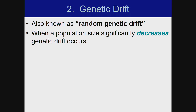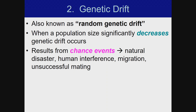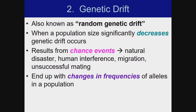Genetic drift is when a population size significantly decreases. It results from chance events like natural disasters, human interference, migration, or unsuccessful mating. The result is changes in the frequencies of alleles in a population.